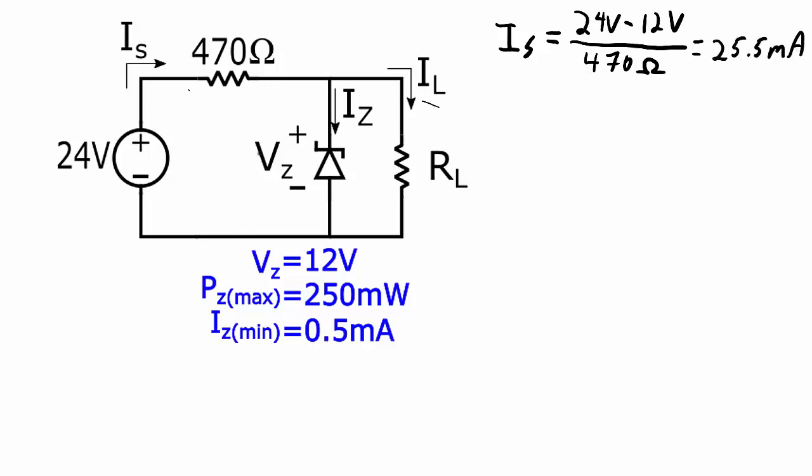So again, as long as this zener diode is regulating properly, the source is going to be providing 25.5 milliamps. That holds true whether we're at the maximum load or at the minimum load. Another thing that's going to hold true no matter what is that that source current gets split between the zener current and the load current.